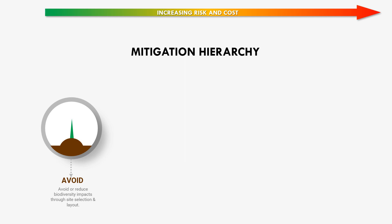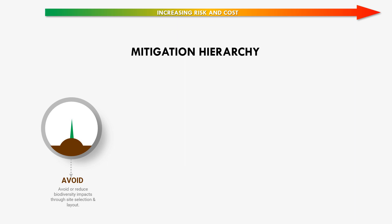Avoid aims to avoid completely or reduce biodiversity impacts through site selection and layout. Project proposals must give the highest priority to avoidance strategies in accordance with the mitigation hierarchy, which is vital to delivering cost-effective additionality.